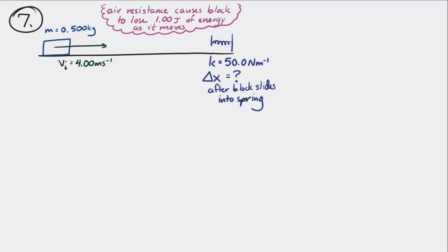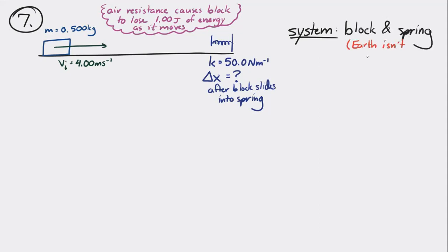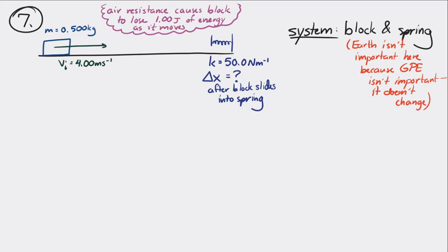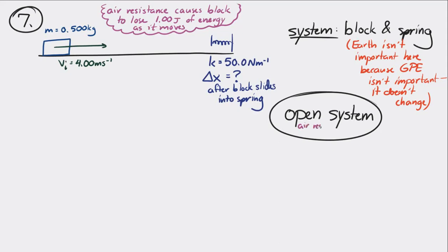We want to determine the maximum compression of the spring once the block slides into it. Air resistance is going to cause this block to lose one joule of energy on the way. If we make the system the block, the spring, and the Earth — remembering there's no gravitational potential energy on a flat surface — it's an open system because air resistance is removing energy from the system.